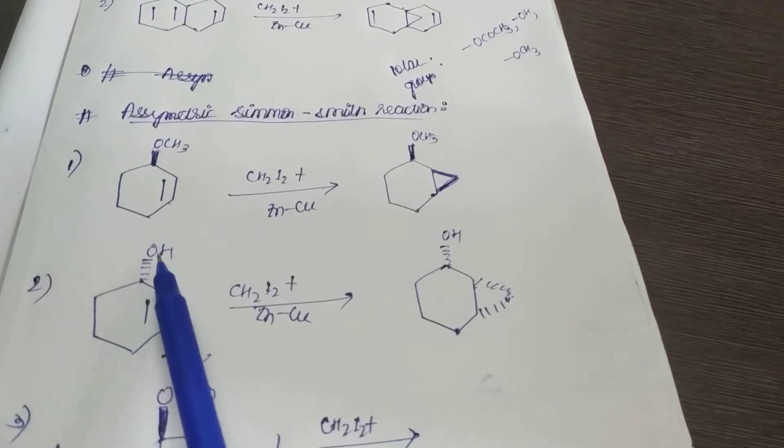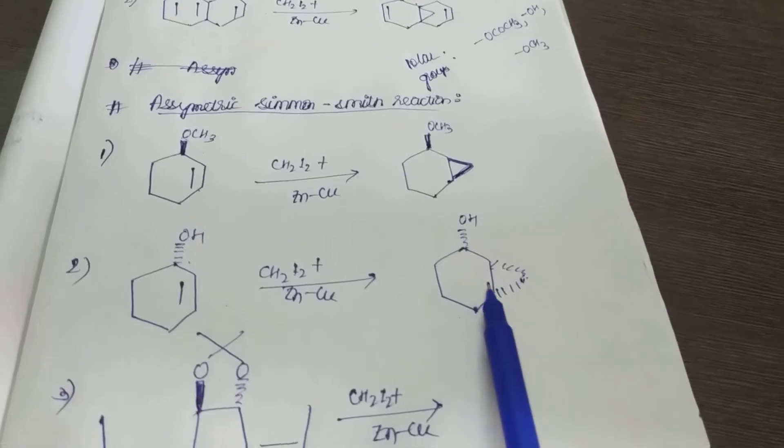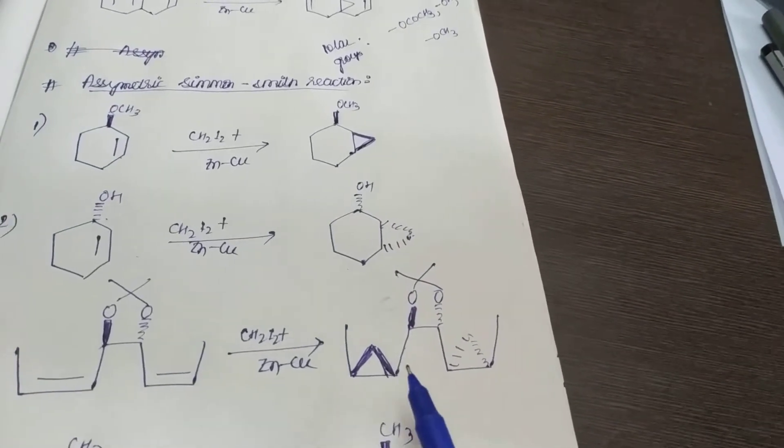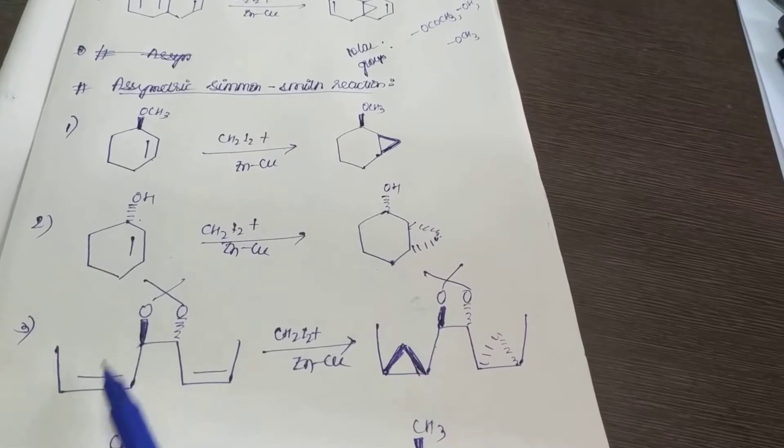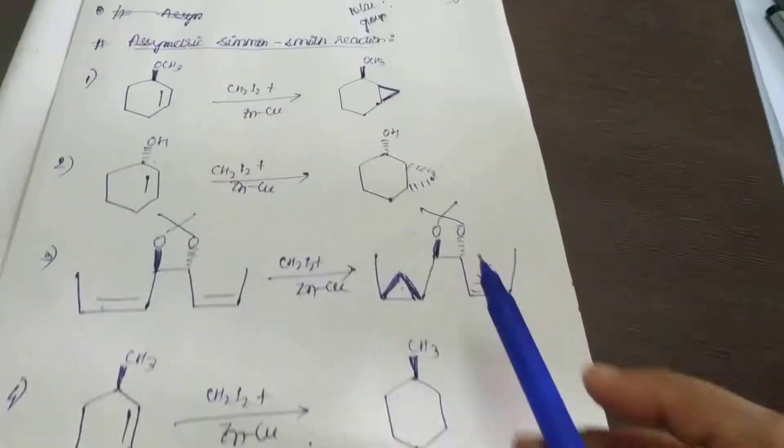In the second example, you see the stereochemistry is down, so the cyclopropane ring will form this way. In the third example, similarly, this oxygen is above the plane, so this will form with that stereochemistry, right? Now in the last